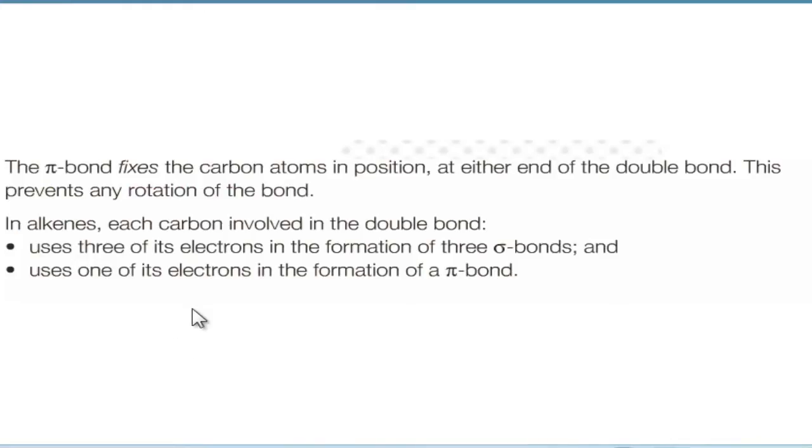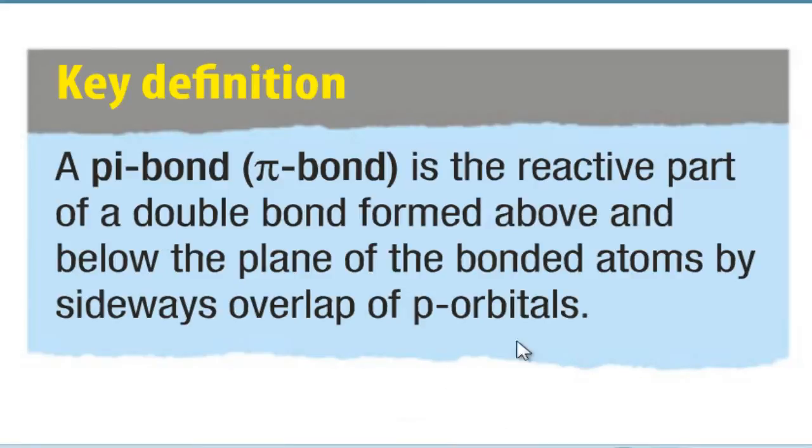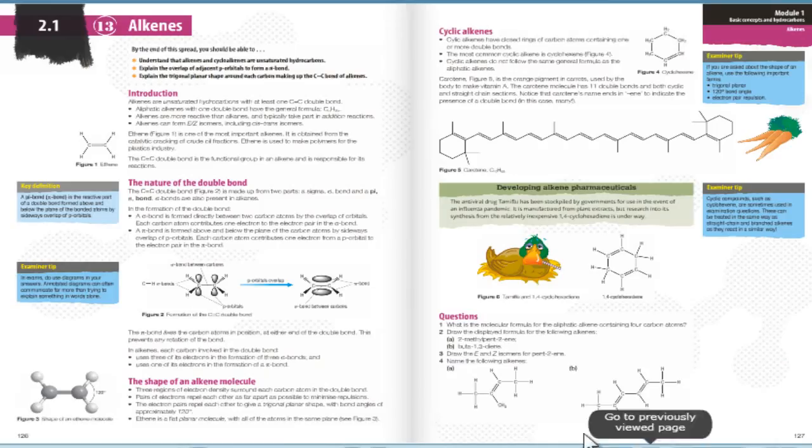The pi bond fixes the carbon atoms in position at either end of the double bond. This prevents any rotation of the bond. In alkenes, each carbon involved in the double bond uses three of its electrons in the formation of three sigma bonds and uses one of its electrons in the formation of a pi bond. A pi bond is the reactive part of a double bond formed above and below the plane of bonded atoms by sideways overlap of the p orbitals.